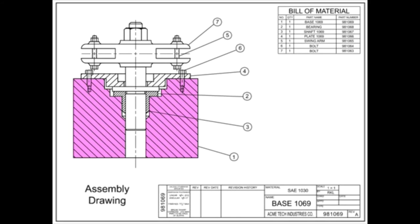of the part. Section lines are used to indicate the portions of the assembly that have been cut away.